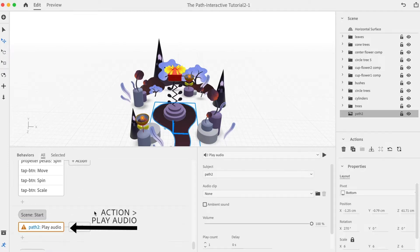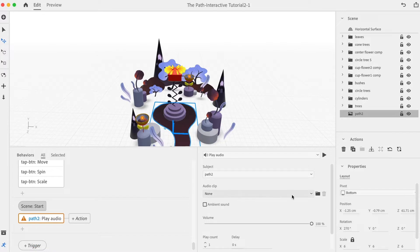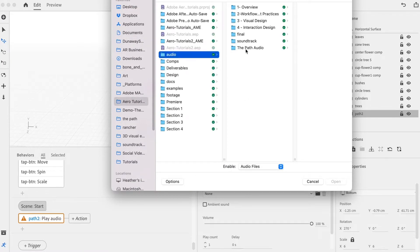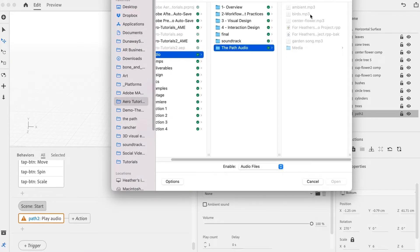I'll hit trigger and select start. Next, I'll add a play audio action. I'll scroll down to audio clip and click on the folder icon. This opens up a file tree and I can direct it to the background track that I want to play.